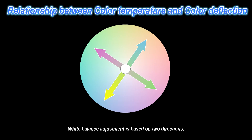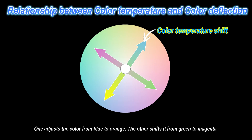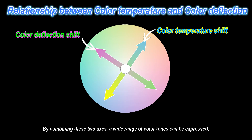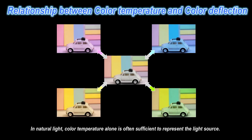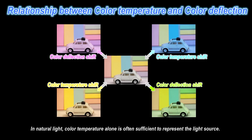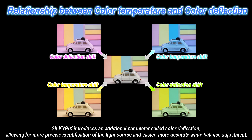White balance adjustment is based on two directions: one adjusts the color from blue to orange, and the other shifts it from green to magenta. By combining these two axes, a wide range of color tones can be expressed. In natural light, color temperature alone is often sufficient, which is why digital cameras and color meters may indicate only the color temperature. SilkyPix introduces an additional parameter called color deflection, allowing for more precise identification of the light source and easier, more accurate white balance adjustment.